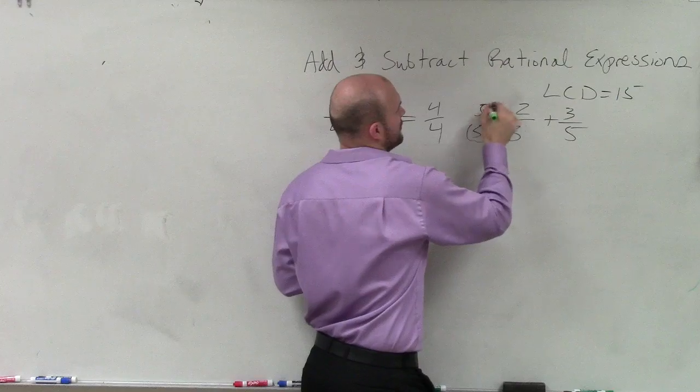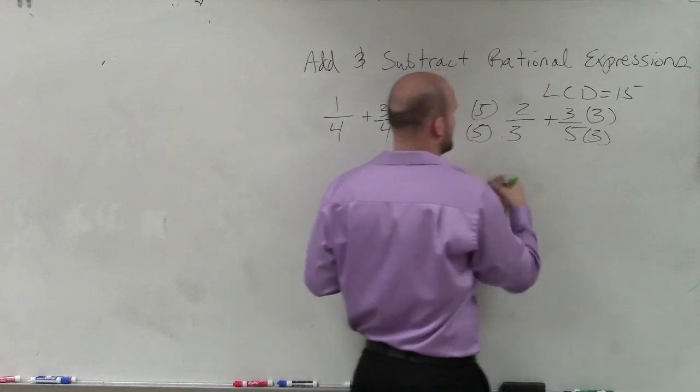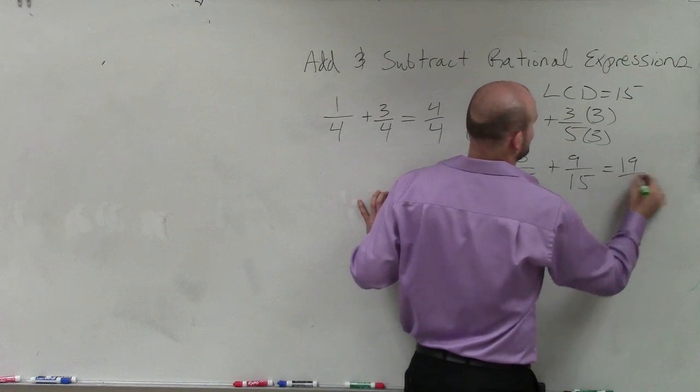So then I'd multiply this side by 5/5, keeping my fractions equivalent by multiplying on the numerator and denominator. And then you could say 10/15 plus 9/15 equals 19/15.